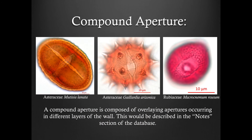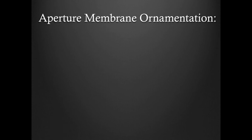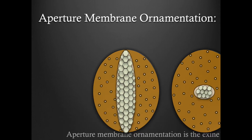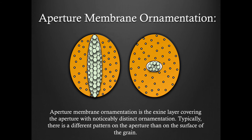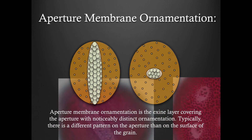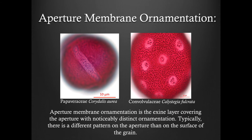Here are a few examples. Aperture membrane ornamentation is the exine layer covering the aperture that has a noticeably distinct ornamentation. Typically, there is a different pattern on the aperture than on the surface of the grain. Here are a few examples.